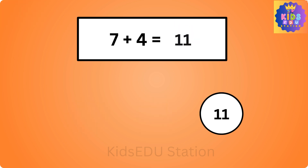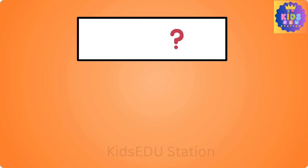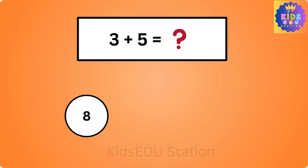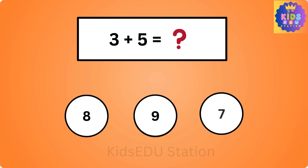7 plus 4 is 11. What is 3 plus 5? 8, 9, 7.